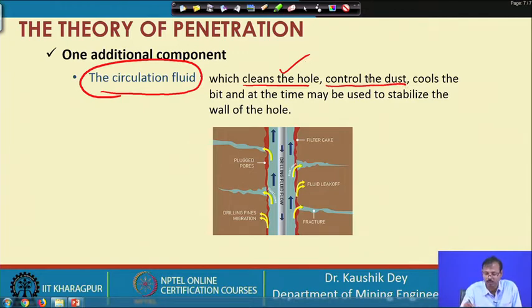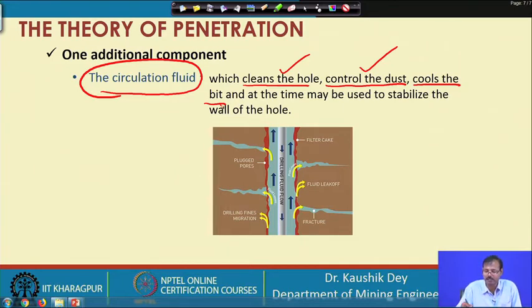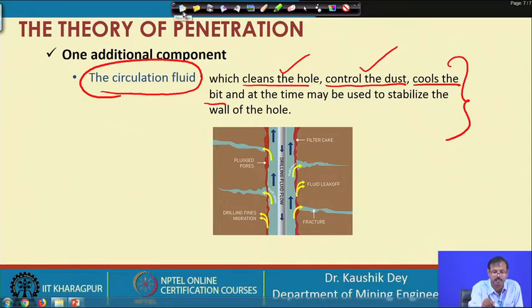The circulation fluid also suppresses dust and cools down the bit. Due to the repeated hammering or rotary action, the temperature at the bit tends to increase significantly. The purpose of the circulation fluid is to keep the bit temperature low so that disintegration or fracturing of the bit material does not occur. That is why circulation fluid is very important in drilling.